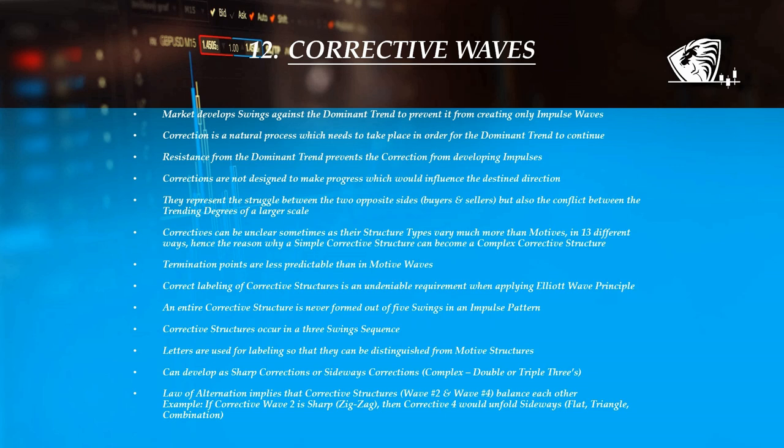The analyst practicing the Elliott wave method is aware that, when the market is in its corrective stages, more caution is implied along with patience. This is due to the fact that there are multiple possibilities in which a correction can unfold its structure. There's good news as well — just like motive waves, corrections also imply their own rules and guidelines.